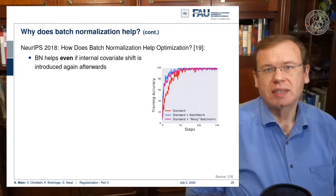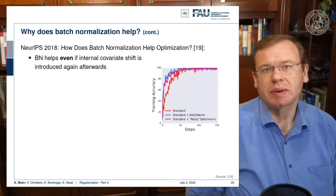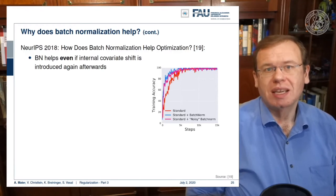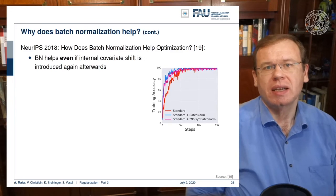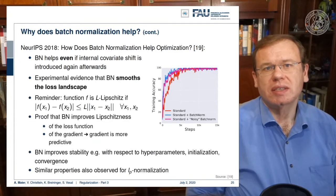On NeurIPS 2018, there was a paper that showed how batch normalization helps optimization. They showed that batch normalization is effective even if you introduce an internal covariate shift after the batch normalization layer again. So still in these situations, batch normalization helped. They could show experimentally that the method smooths the loss landscape.